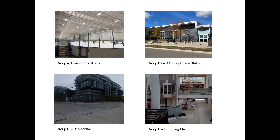Here are examples of the different occupancies. In the top left-hand corner, you're looking at a Group A, Division III arena. In the top right, you're looking at a Group B, which is a one-story police station. At the bottom left, you're looking at Group C, a Residential Apartment Building. And in the lower right-hand corner, you're looking at Group E, a Shopping Mall.